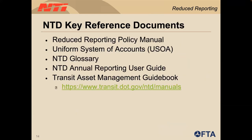There are some key reference documents available online to help you with your reporting. These include the reduced reporting policy manual, which explains the reporting requirements. The uniform system of accounts contains the accounting structure required by federal transit laws. The NTD glossary provides definitions of terminology used within NTD, and the transit asset management guidebook provides details for transit agencies on measuring and reporting TAM-related condition assessments. These can all be found on the link provided in the slide.